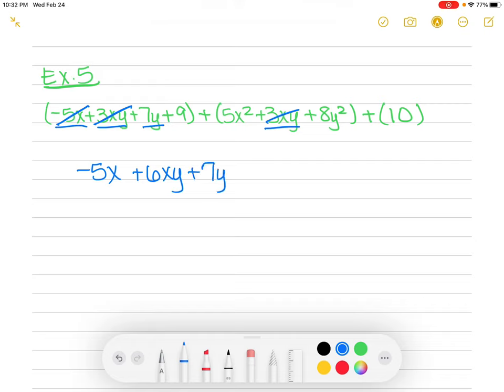No other y's, right? And then right here I have 9. My other constant is over here 10. So that's plus 19. Now notice I haven't crossed everything out. I still have two more. Well, this is an x squared and there's no other x squared. That one's gone. And this one is a y squared and it's all by itself.